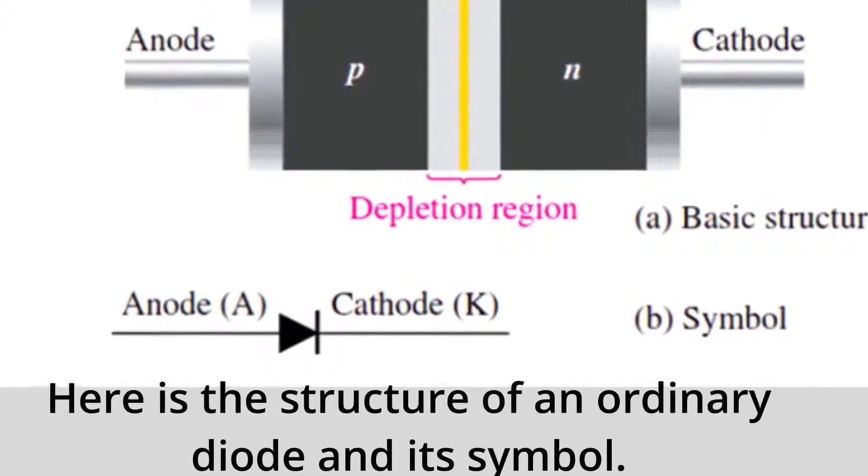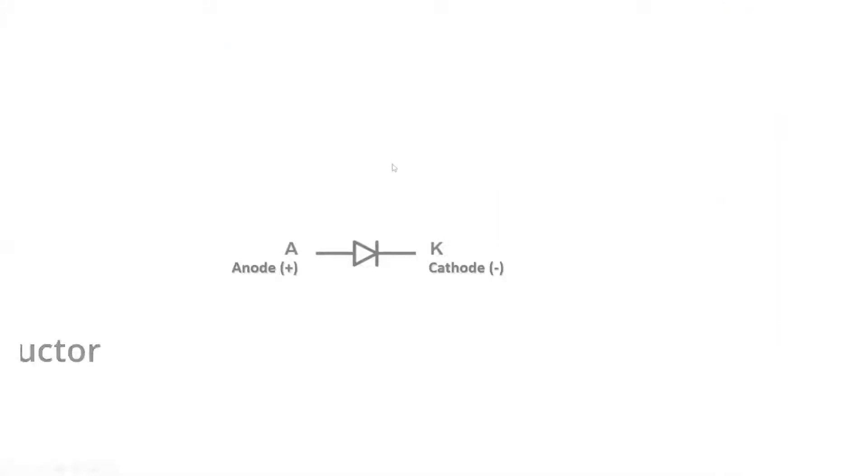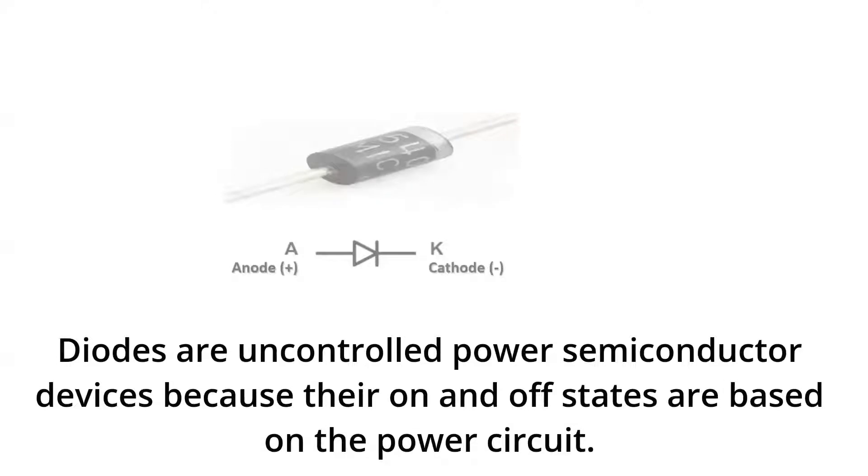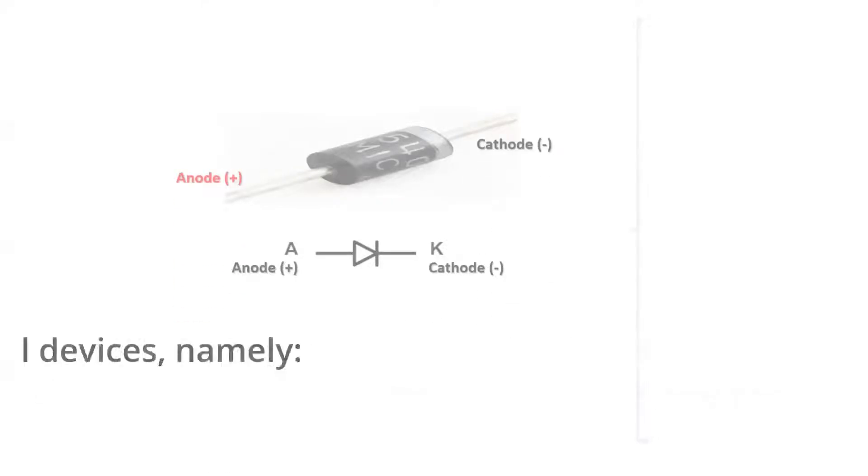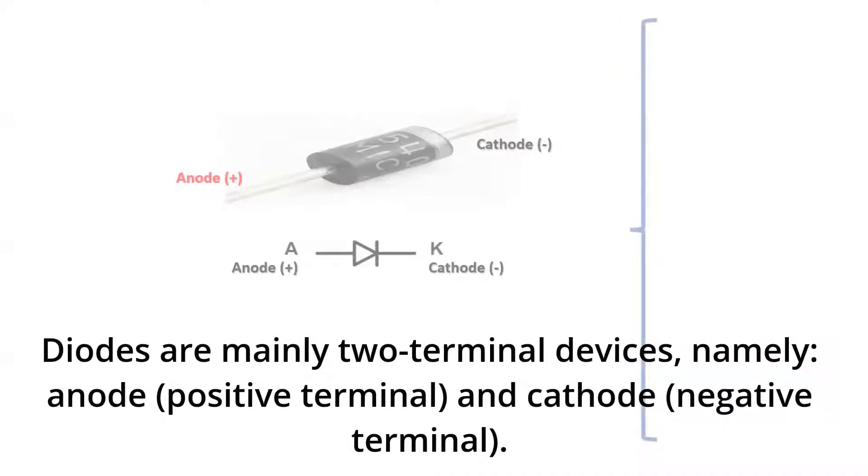Here is the structure of an ordinary diode and its symbol. Diodes are uncontrolled power semiconductor devices because their on and off states are based on the power circuit. Diodes are mainly two-terminal devices, namely anode (positive terminal) and cathode (negative terminal).